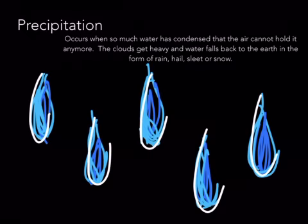Precipitation occurs when so much water has condensed that the air cannot hold it anymore. The clouds get heavy and the water falls back to the earth in the form of rain, hail, sleet, or snow.